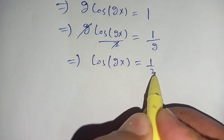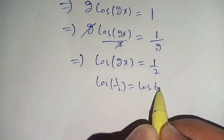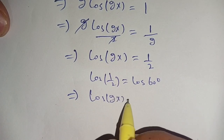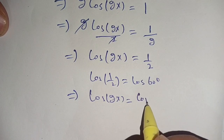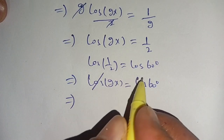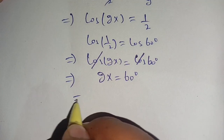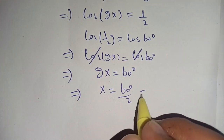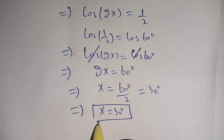This gives us 2·cos(2x) = 1, so cos(2x) = 1/2. We know that cos(60°) = 1/2, so cos(2x) = cos(60°). Cancelling cos from both sides gives 2x = 60°. Dividing both sides by 2, we get x = 30°.